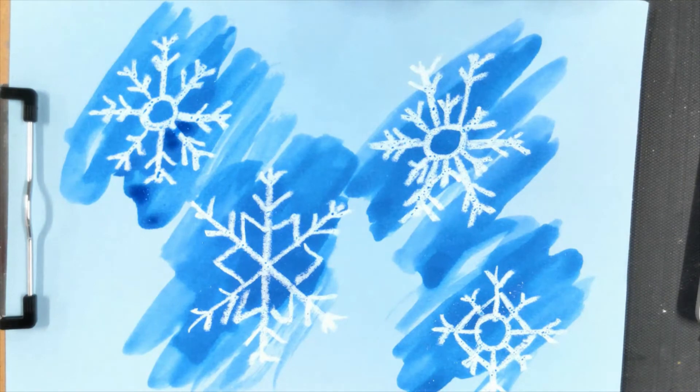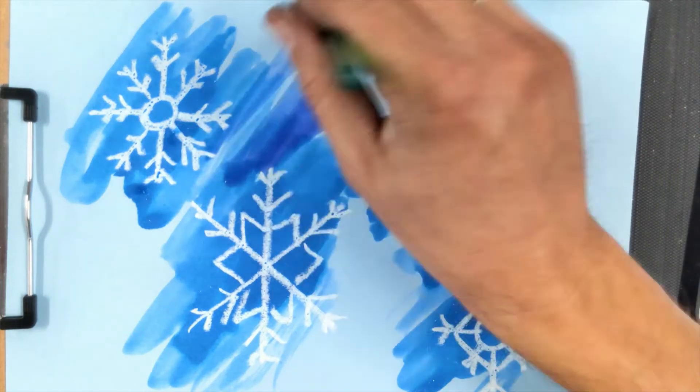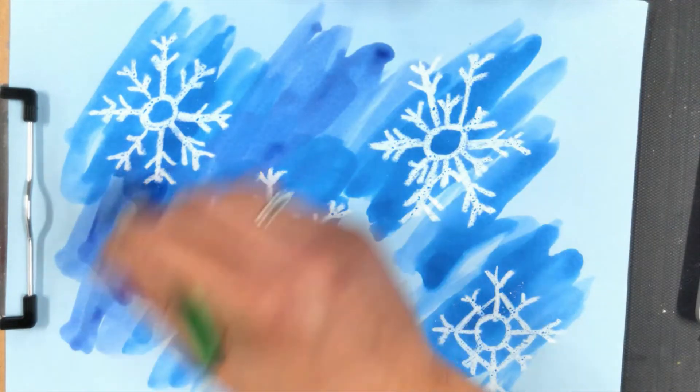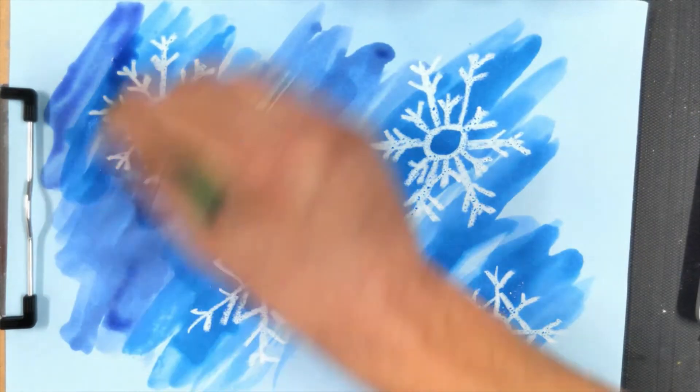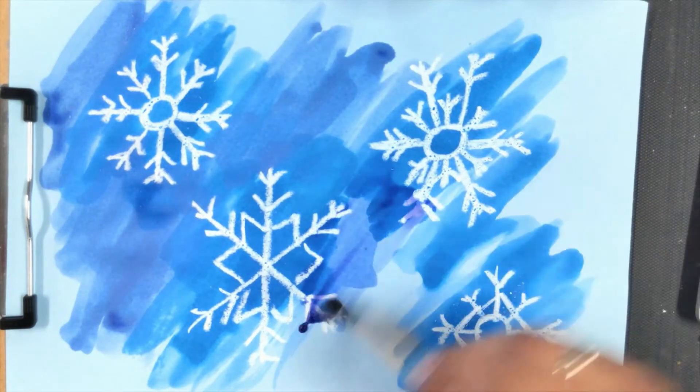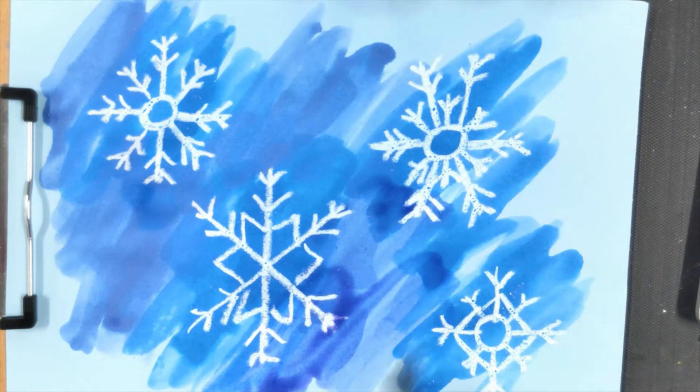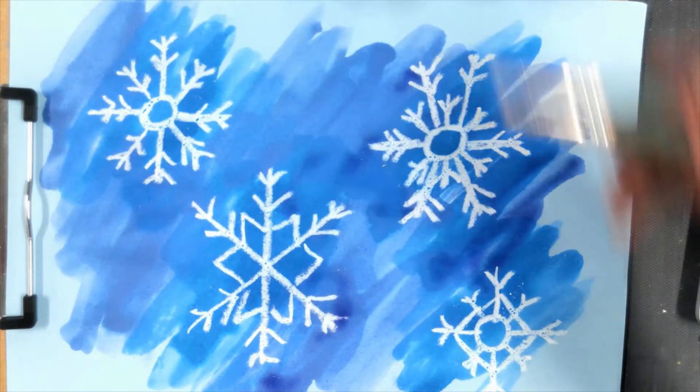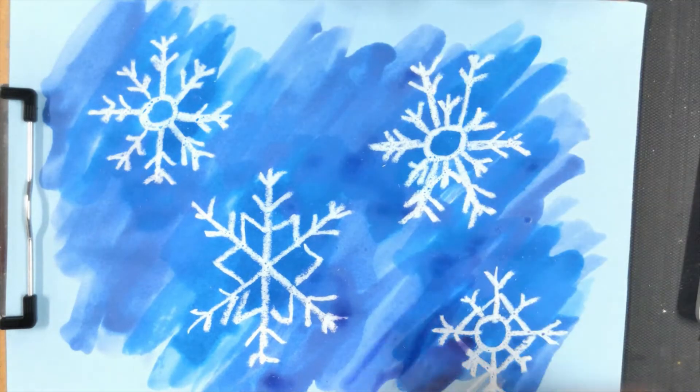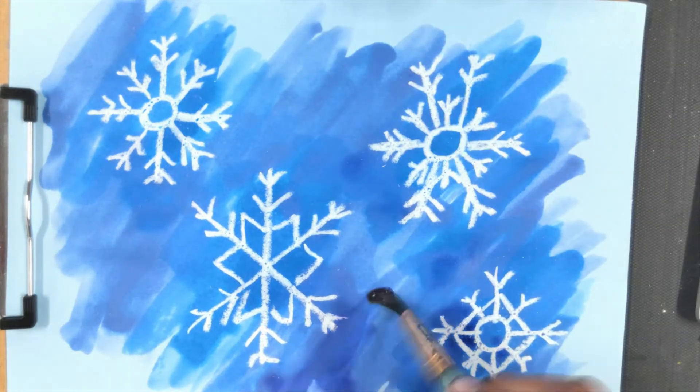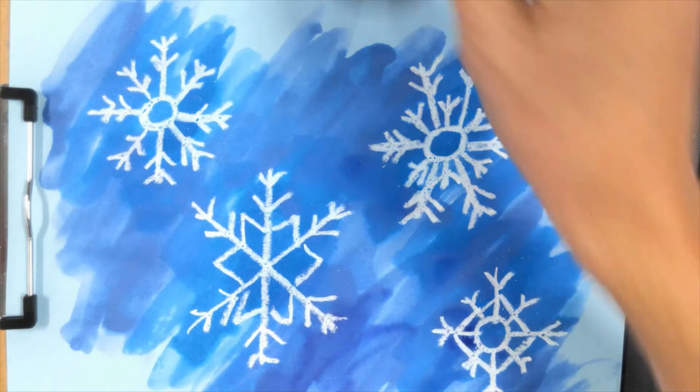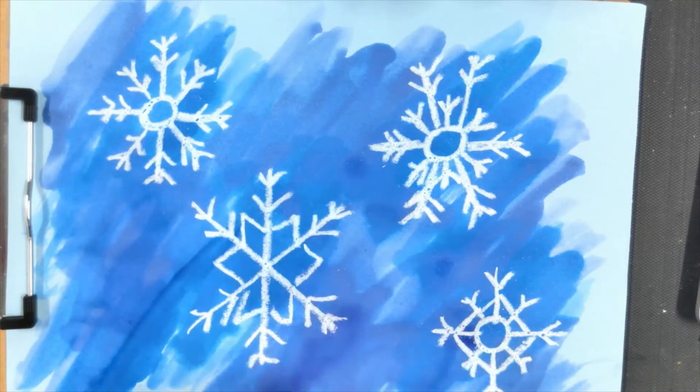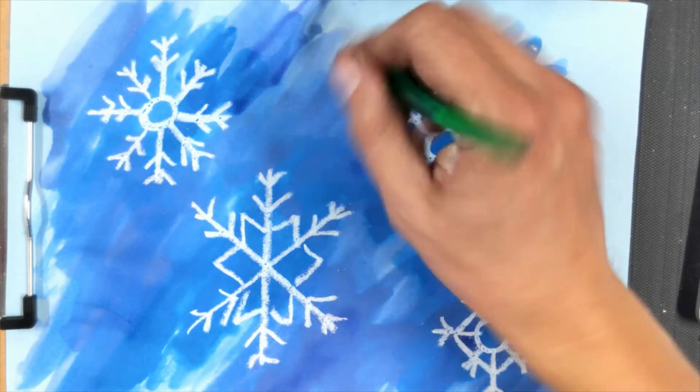I'm going to rinse out the blue from my brush so I don't get blue in my purple. I'm just going to make this look like a pretty winter day in the middle of a snowstorm. And you can paint all the way to the edge of your paper if you want. I think it's kind of fun to leave a little bit of the blue paper showing personally. It's really up to you.